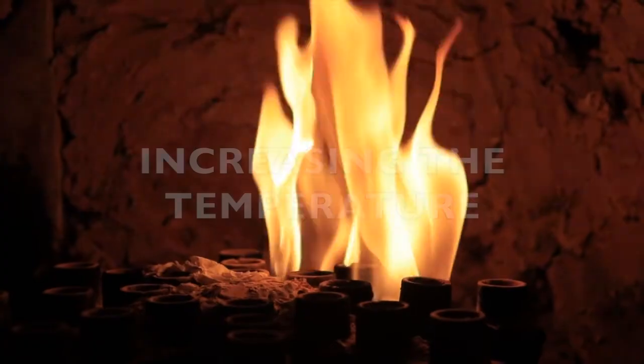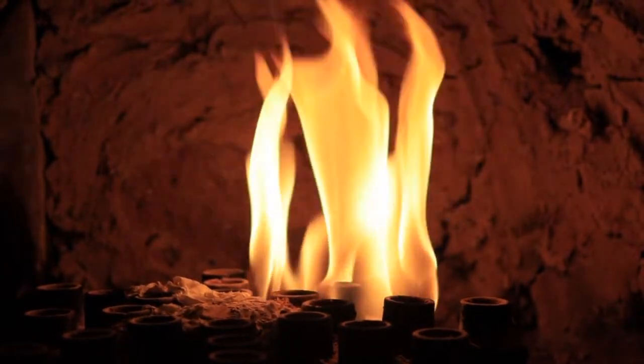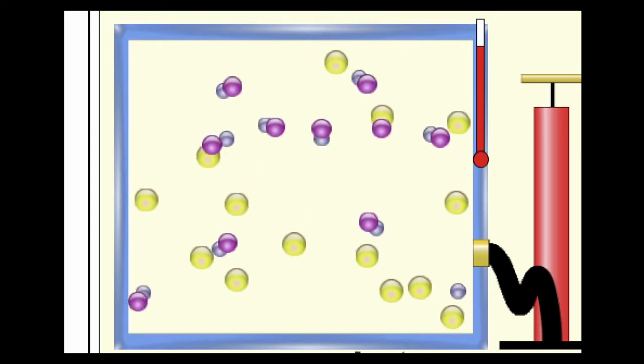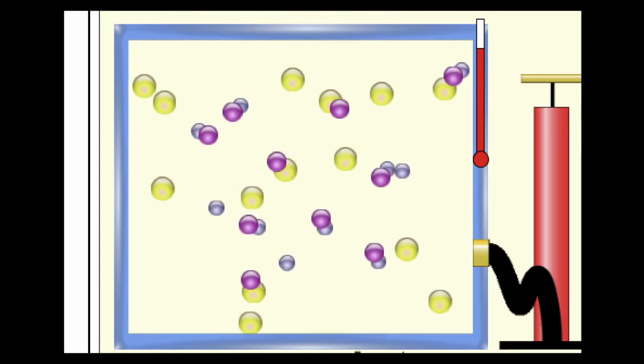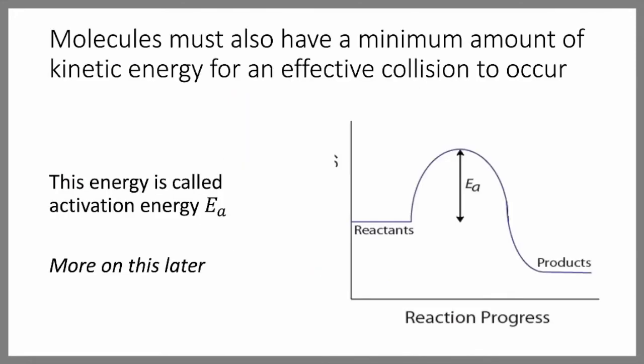Increasing the temperature will also speed up a reaction. When you increase temperature, it leads to a higher average kinetic energy, so more molecules are going to have enough energy for an effective collision to happen. In other words, there are more particles that have enough energy to overcome the activation energy barrier. You may remember activation energy from a previous chemistry course. We're going to be talking about this a lot more in upcoming lessons.